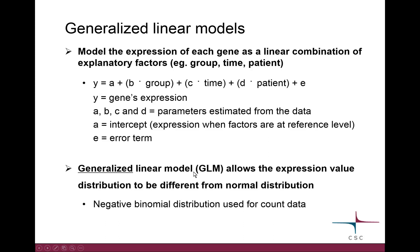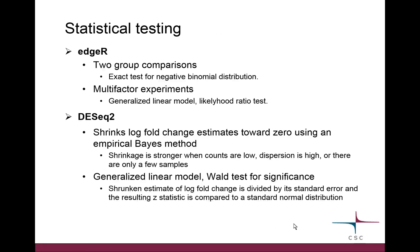We call it a generalized linear model because the expression values are not normally distributed but are thought to follow the negative binomial distribution. Both edgeR and DESeq2 are quite similar: both are based on negative binomial modeling and generalized linear models.